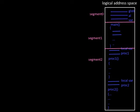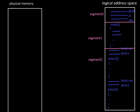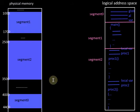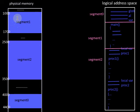We can load the segments to any address space of the physical memory if enough space is available. Suppose segment 0 is loaded to the address 4000, segment 1 is loaded to the base address 1000, and segment 2 is loaded to the address 2500.